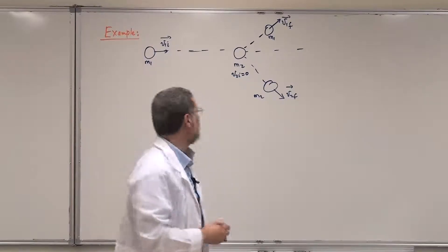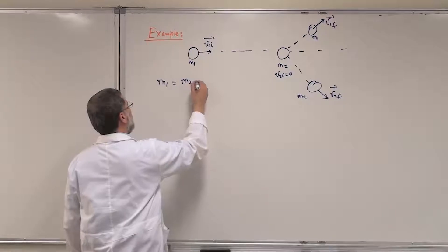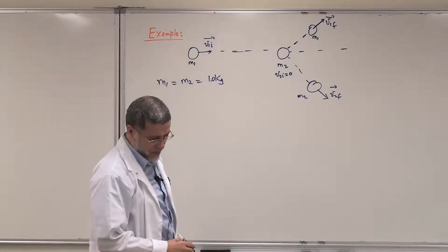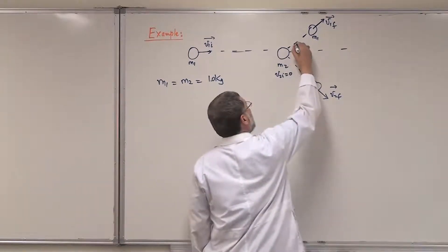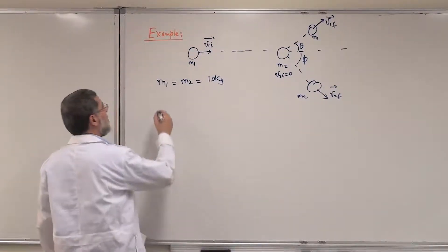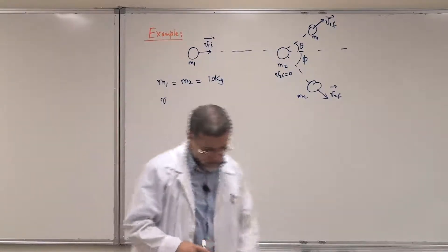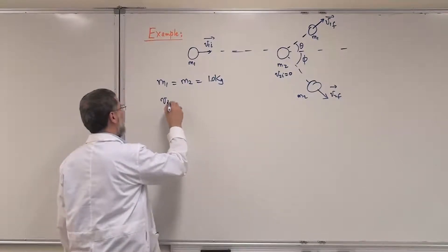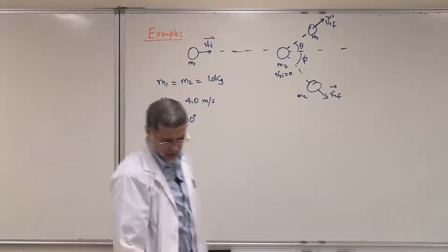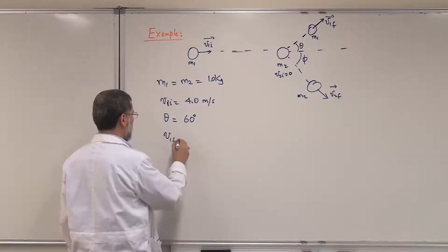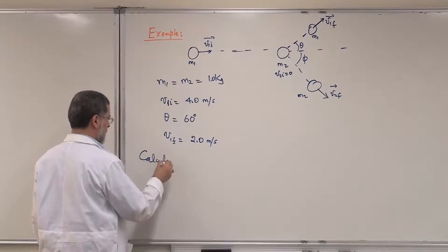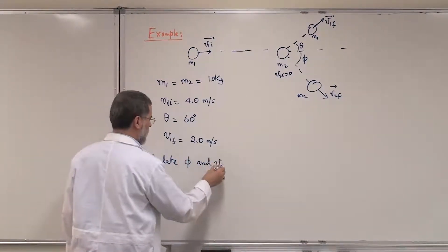Let's take the case where M1 equals M2 — say one kilogram — to make things easy. We have two angles: theta and phi. V1 initial is 4 meters per second, theta is 60 degrees, V1 final is 2 meters per second. We are asked to calculate the angle phi and V2 final. So we have two unknowns and we need two equations.